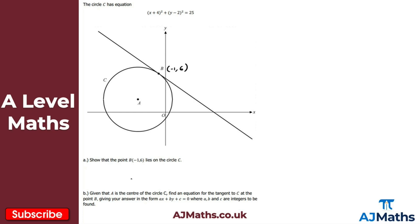To show that point B lies on circle C, we take the coordinates minus one, six and substitute them into the equation. If this point lies on the circle, then substituting x and y into the left-hand side must give a value equal to the right-hand side. So we get: x plus four all squared gives minus one plus four all squared, plus y minus two all squared gives six minus two all squared, and this should equal 25.